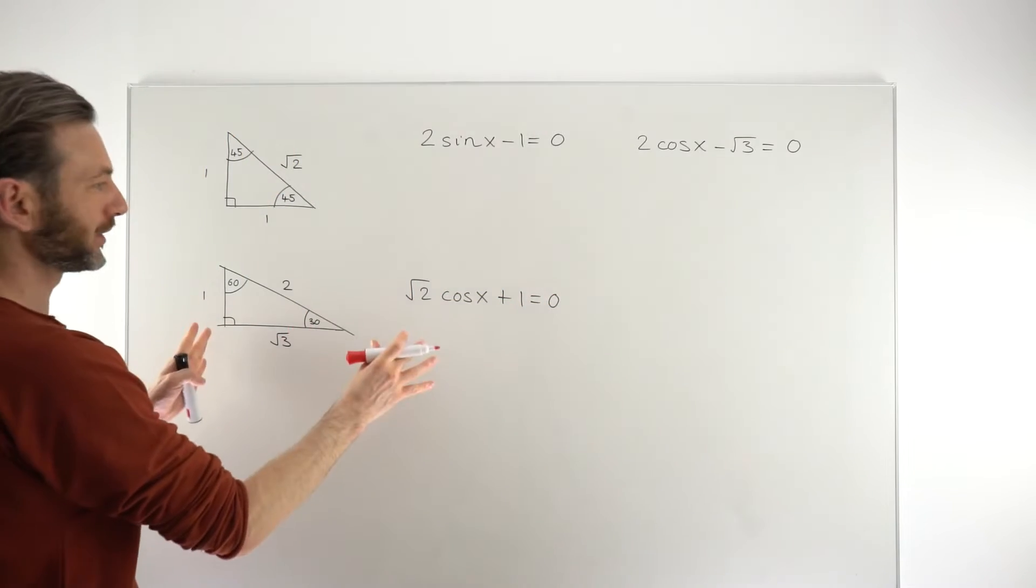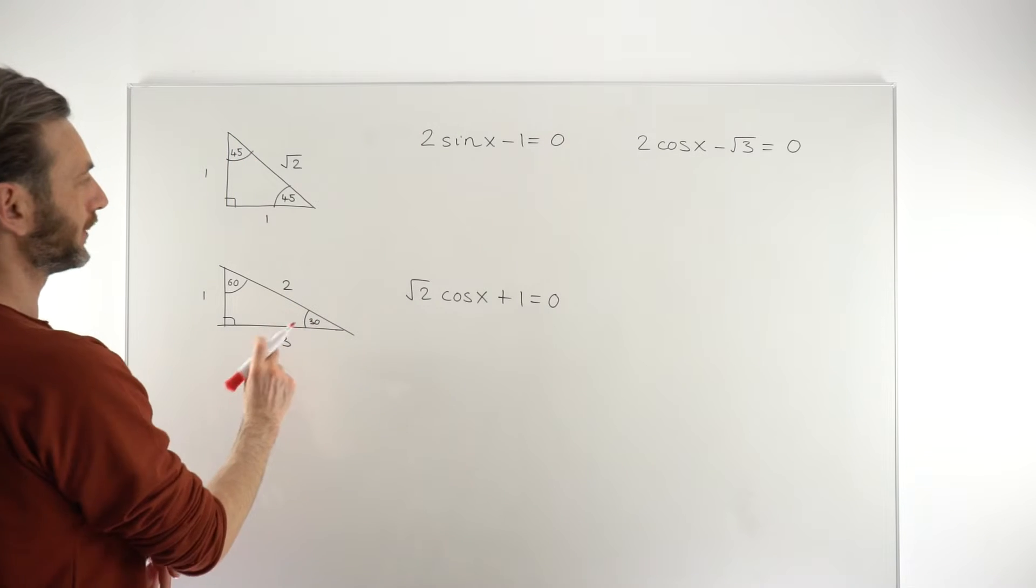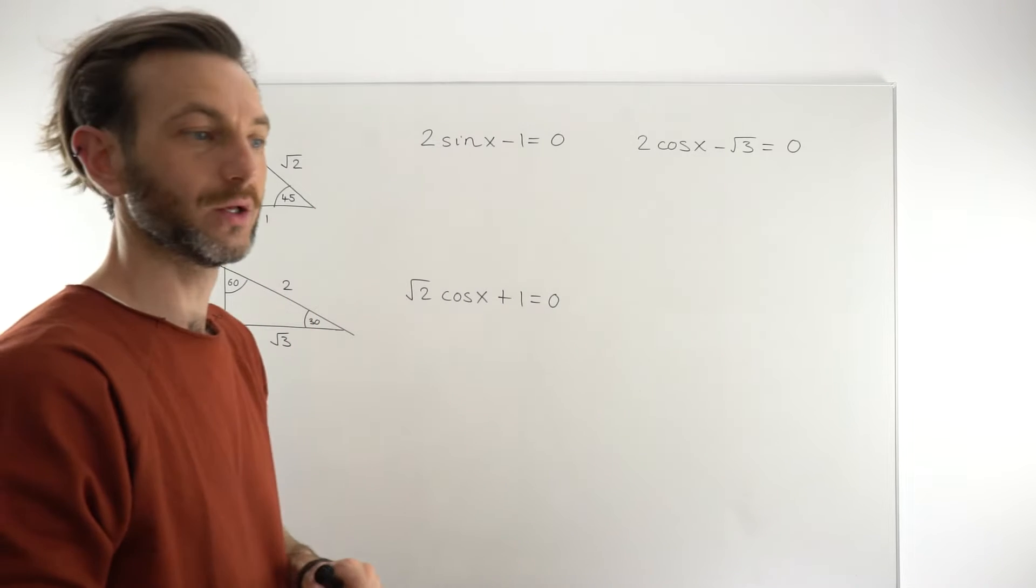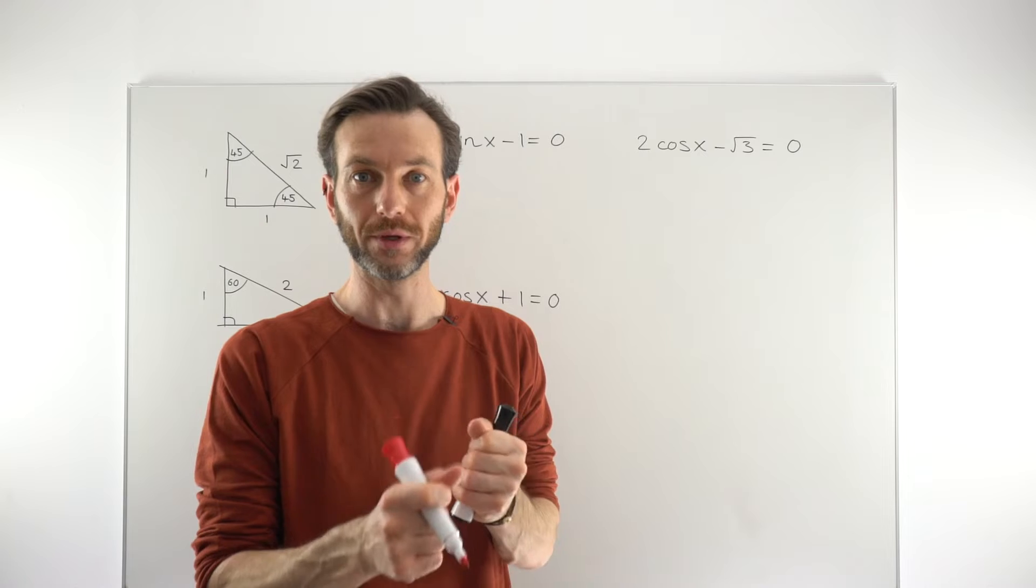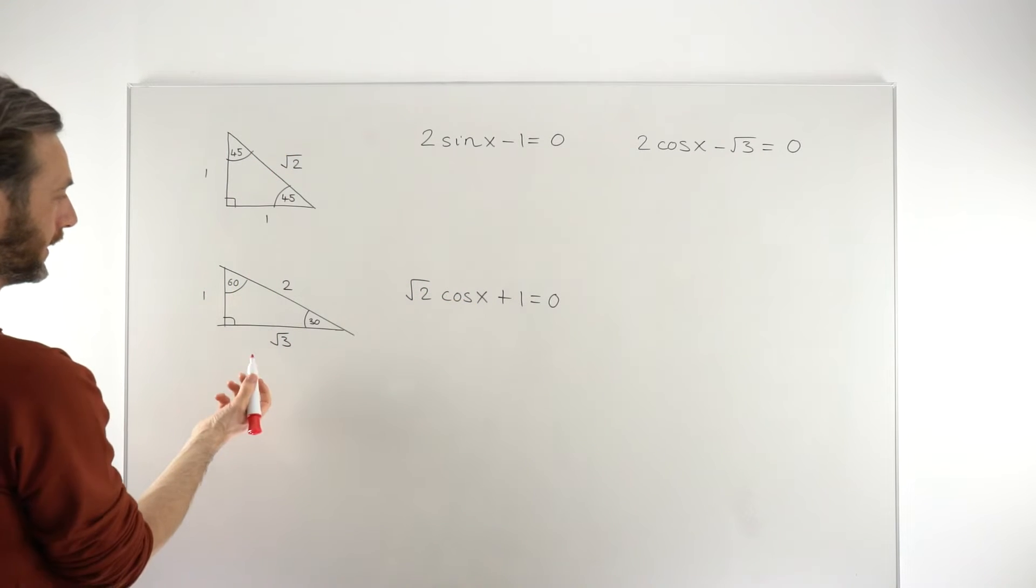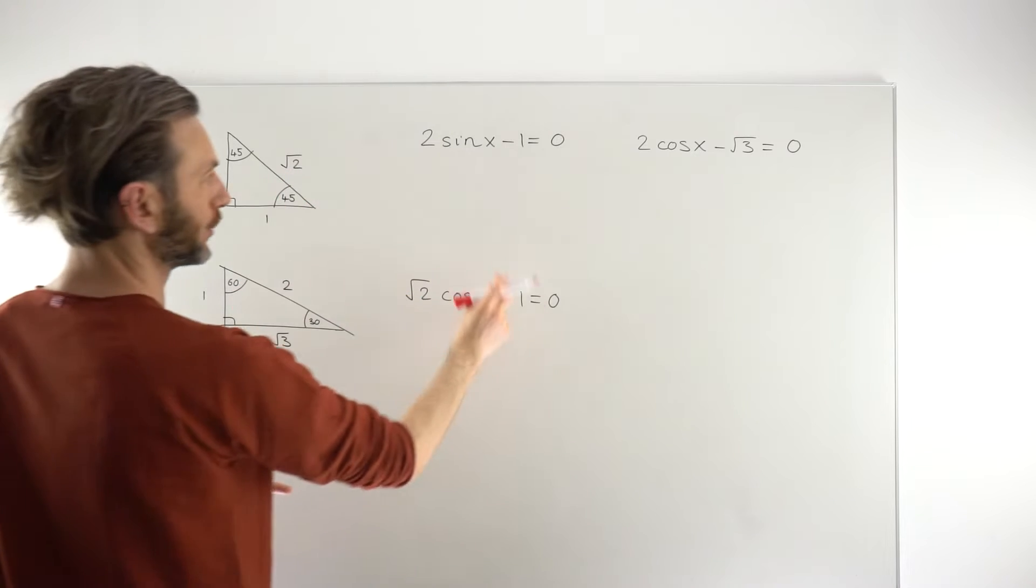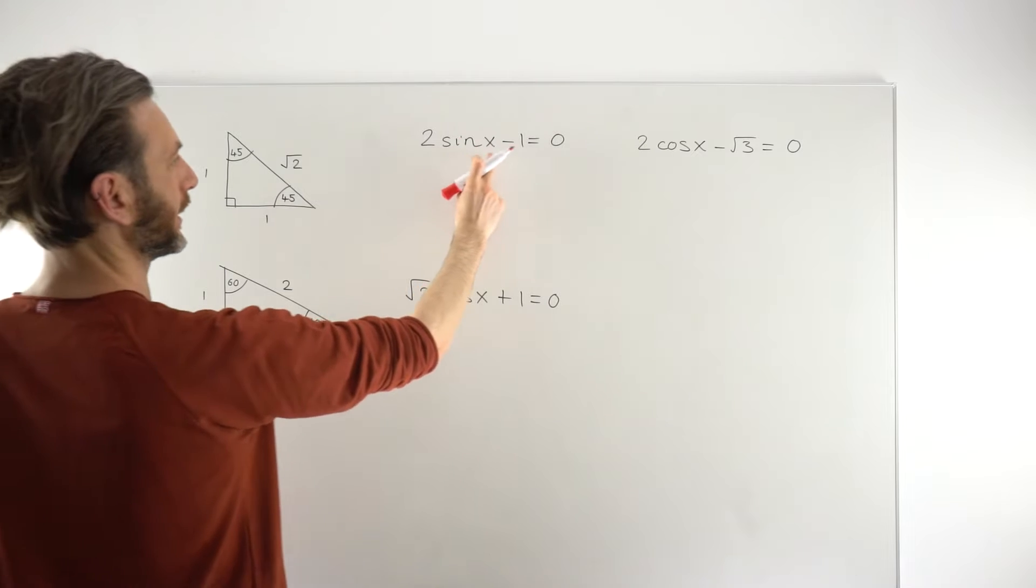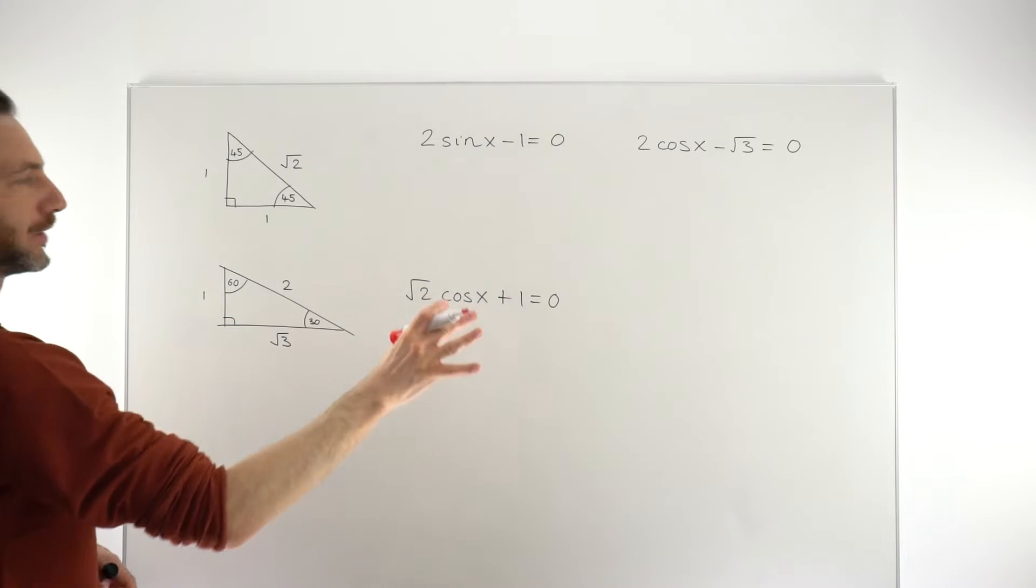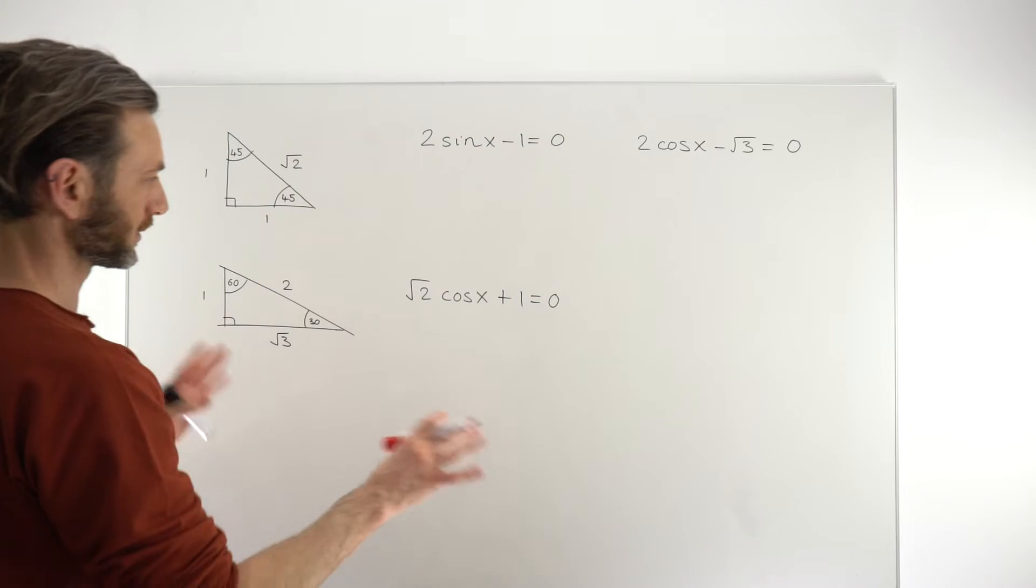But the key with this really is that we've got to use what is called trig exact values. And exact values means using effectively these two special triangles to generate the values that we would otherwise get from the calculator. It also means that because we're kind of restricted to using these triangles, then we're always going to see the numbers 1, 2, root 3 or root 2 in the equations. If you see an equation that says 2 sin x minus 5 or some other number, that can't be a non-calculator question. That can only be done with the use of a calculator.